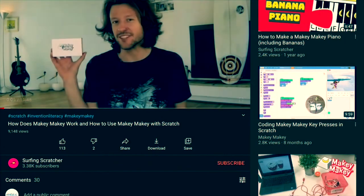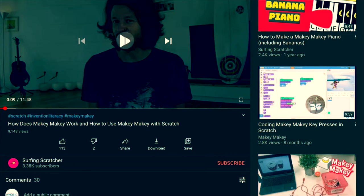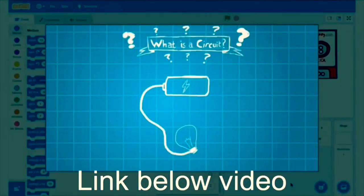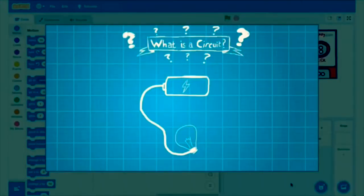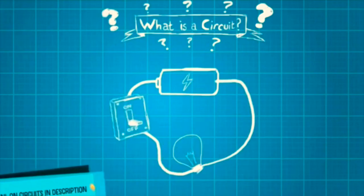Now I found this awesome YouTube channel, Surfing Scratcher, and in this video he talks about how Makey Makey is like a circuit. So what I'll need to do is hit another wire and round off our circuit. And as soon as I attach it, our light bulb turns on.